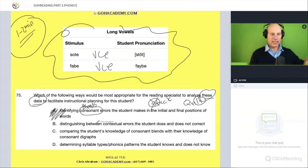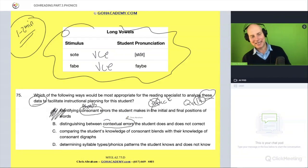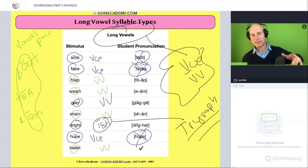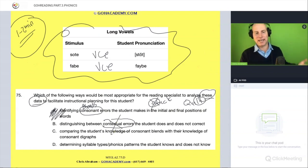Is it B, distinguishing between contextual errors? I like that way of saying context clues. The student does and does not correct. So that means that the student is not picking up on context clues. And these are all words, just to go back to this one here, that are in isolation. So, one, they're nonsense words and they don't make sense. And two, there's no context. So there would be no contextual clues to help you. So in that way, there couldn't be any contextual errors because there's no contextual clues.